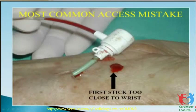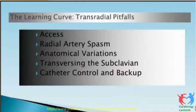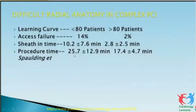The learning curve with trans-radial: there are problems including radial artery spasm and anatomical variation. In the first 80 cases, access failure is about 14 percent by older data, but now it is less than 8 to 10 percent for younger cardiologists. After 80 cases, failure rate is less than 1 percent. Access time is 10 minutes in the first 80 cases and 2.8 minutes after crossing 80 cases.